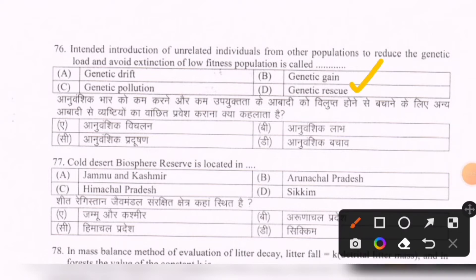Next question: Cold Desert Biosphere Reserve is located in — options are: Jammu and Kashmir, Arunachal Pradesh, Himachal Pradesh, Sikkim. The correct option is C — Himachal Pradesh.